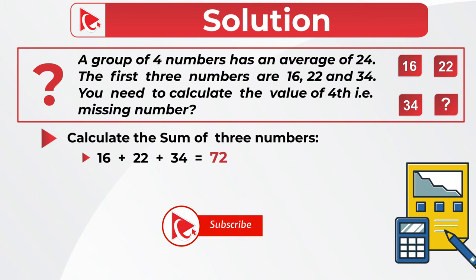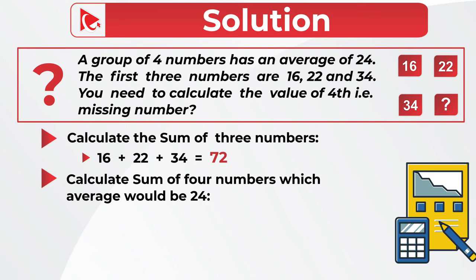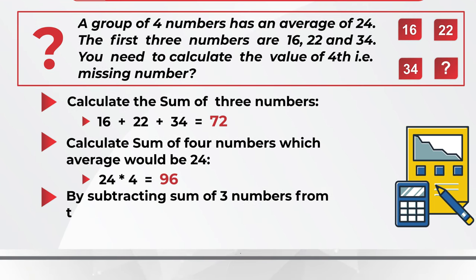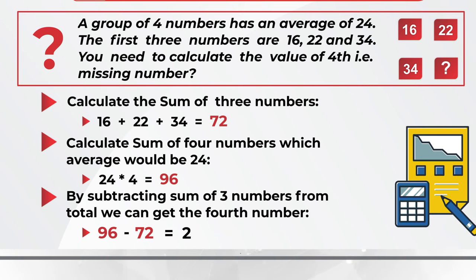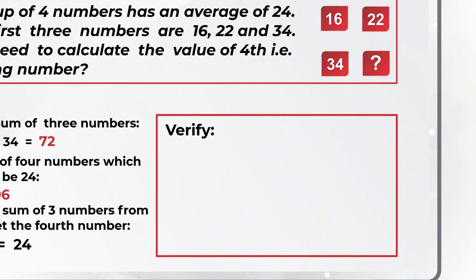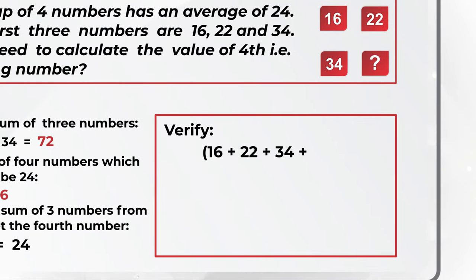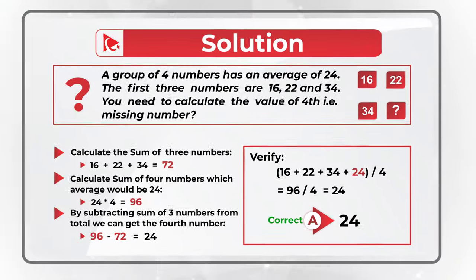Next, determine the total sum needed for an average of 24: multiply 24 by 4 to get 96. Then subtract the sum of the three known numbers from the total: 96 minus 72 equals 24. Verification: 16 plus 22 plus 34 plus 24, divided by 4, equals 96 divided by 4, equals 24. The correct answer is choice A: 24.